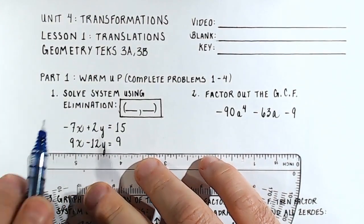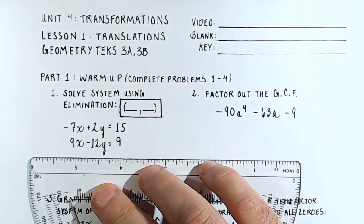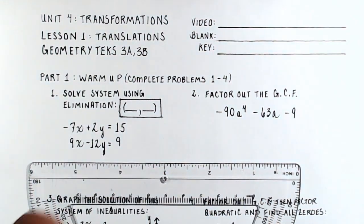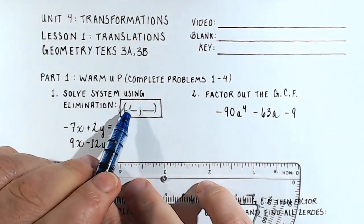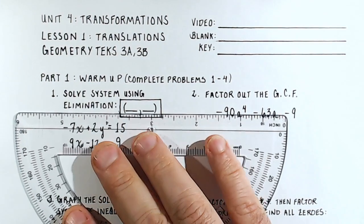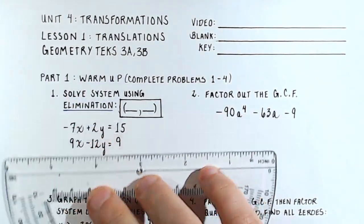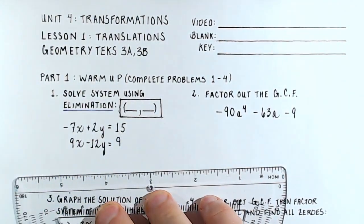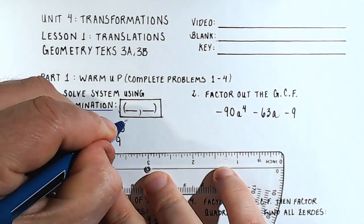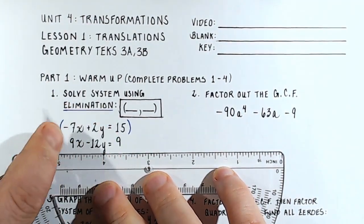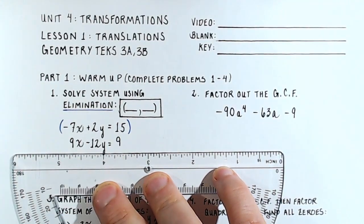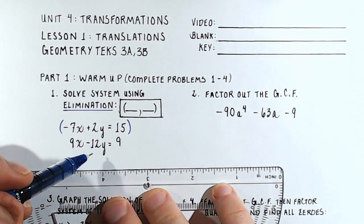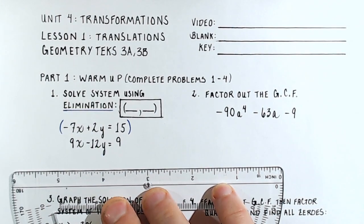In the first question, we are asked to solve a system of equations using elimination. So what we're looking for here with these two linear equations is where they cross — the coordinates of where they cross. We have to eliminate one of our variables, and we'll eliminate the y variable by multiplying through the top equation, distributing some term such that this 2 becomes a 12.